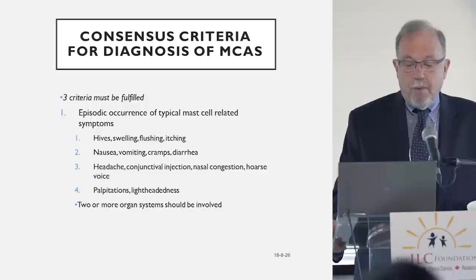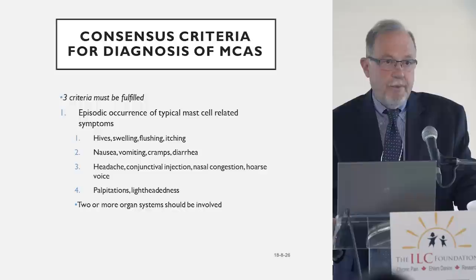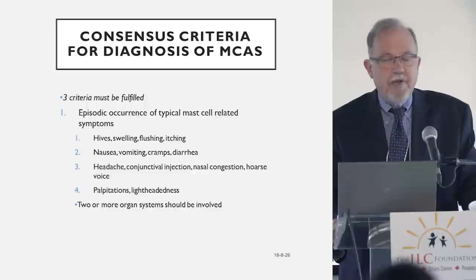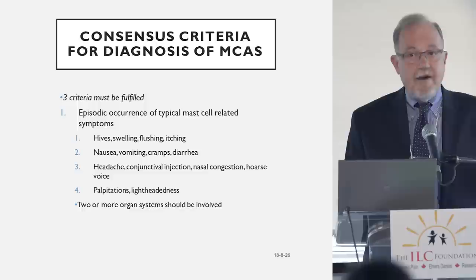In other words, the population with familial increases in alpha tryptase seems to have a high likelihood of also having EDS and a high likelihood perhaps of having dysautonomia of some sort. To circle back around to the consensus criteria, there are three criteria needed to make a diagnosis of mast cell activation syndrome with some certainty. One is to have the appropriate symptoms.